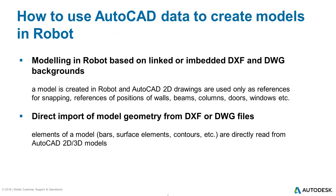There are two ways in which one can use DWG and DXF files for creation of models in Robot. If used as backgrounds, which is typical for buildings, they are just lines used for easy definition of walls, beams or columns, and they aren't a part of the defined structure. When such files are opened directly, lines, polar lines and other objects defined create the Robot model themselves.